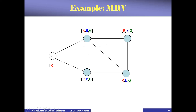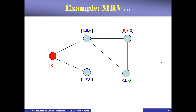Let's see this in another example. Here we have nodes to color. All nodes except the first have three options: red, blue, or green. Only the first node can only be red. The edges represent the constraints — connecting edges cannot have the same color. So we start with this node because according to the algorithm we choose the one with minimum remaining value. This node originally has only one possibility, which is red.